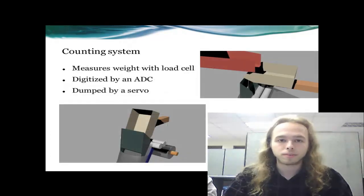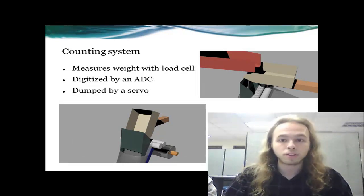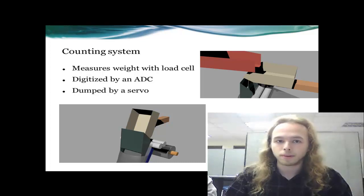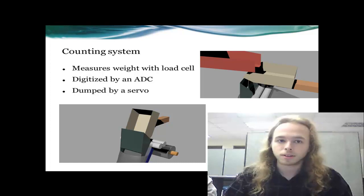A load cell will be used to measure this weight. A load cell was chosen because of its simplicity and low cost. They provide a variable voltage directly proportional to the force put upon them. For the microcontroller to read this voltage, an ADC will need to be used. Although the microcontroller is equipped with a 10-bit onboard ADC, it is not accurate enough to get the precision necessary. To get the needed precision, a 16-bit offboard ADC will need to be used. A servo is used to dump the hardware batches into the bagging system.